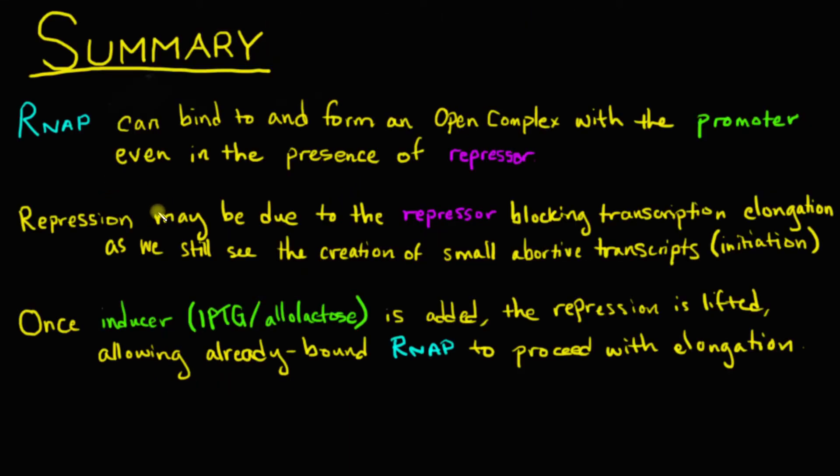So to summarize what we talked about in this presentation, RNA polymerase is able to bind to and form an open complex with the promoter of the lac operon, even in the presence of repressor. The repression that we see may be due in fact to the repressor blocking transcription elongation, as we still see the creation of small abortive transcripts indicating that initiation does in fact occur. Once we add in our inducer, either IPTG or allolactose, then the repression is lifted, which allows any already bound RNA polymerase to proceed with elongation.